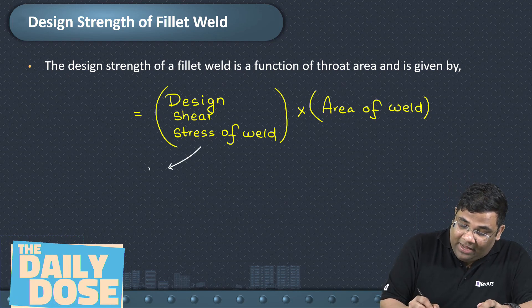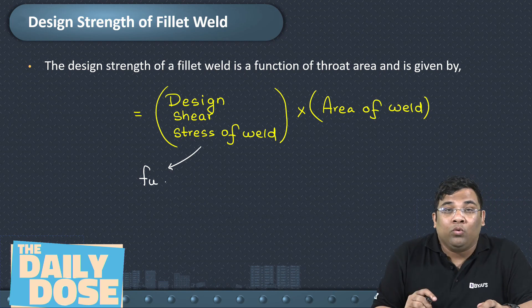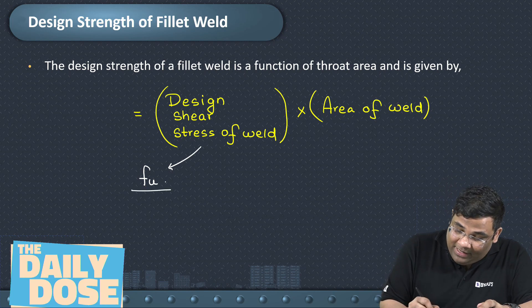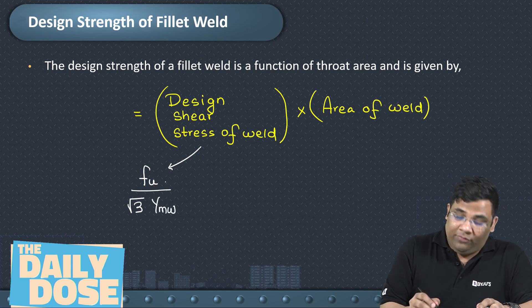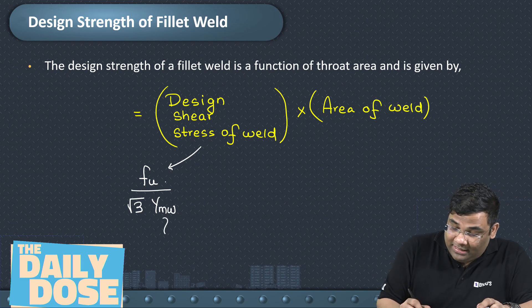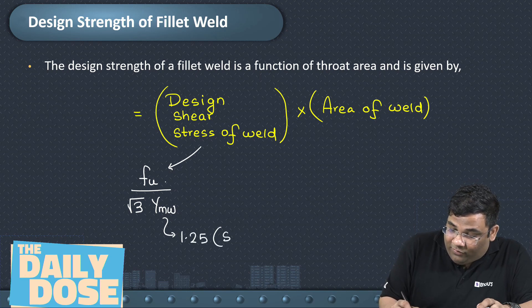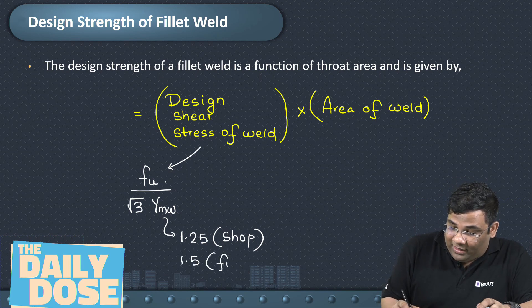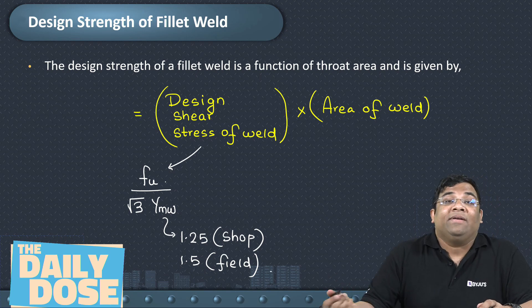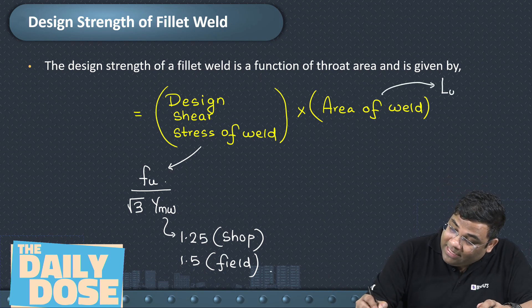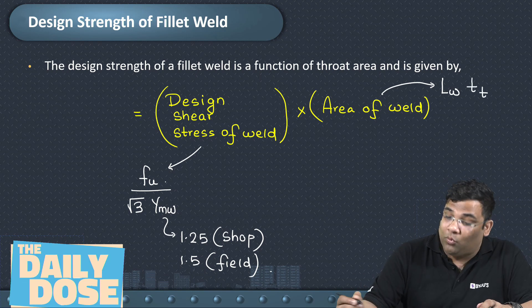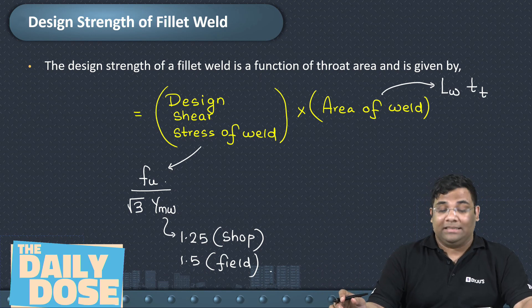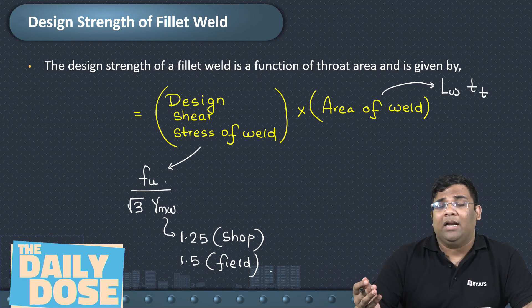The design shear strength of the weld is fu divided by root 3 into γmw, where fu is the ultimate stress and γmw is the factor of safety for weld. It is 1.25 for shop welding and 1.5 for field welding. The area of weld is the length of weld (lw) multiplied by the throat thickness.